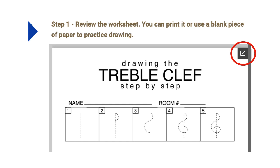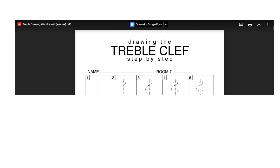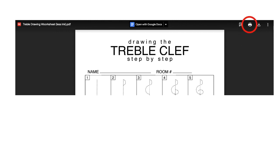So if you'd like to print or download that document, you can click that icon. That will open up a new window in your browser that looks like this. In the top left hand corner, it will say the name of the document. And in the top right hand corner, you'll see some icons. If you click on the printer icon, that will print that document for you.